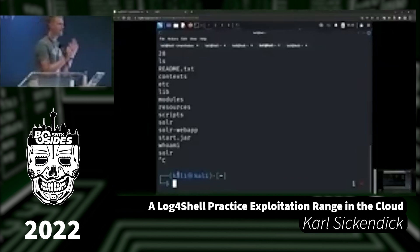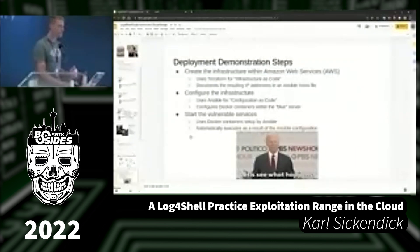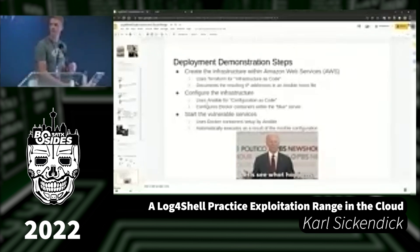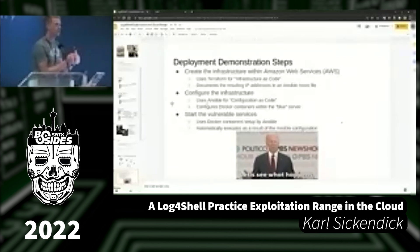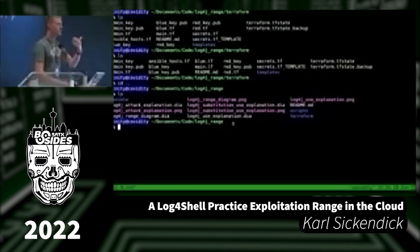We've seen exploitation and demonstrated this range. How did this get deployed, and how can you run this on your own AWS account? There are three steps to deployment: first, create infrastructure within AWS using Terraform; second, configure that infrastructure using Ansible; and third, start those vulnerable services — which happens automatically as a result of Ansible. I'm logged into my home server that I used to deploy this. There's a Terraform directory and an Ansible directory — those are the most critical things.